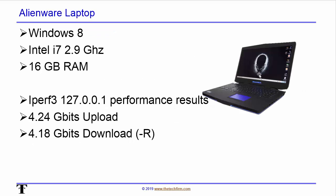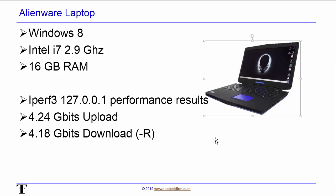I used my Alienware laptop running Windows 8, with an i7 processor at 2.9 GHz and 16 gigs of RAM — a fairly beefy computer. My iperf results were 4 gig up and 4 gig down. The reason I did that was because if I can't get at least 100 meg within my machine, there's no way I'm going to get 100 meg outside of it. You have to calibrate and test your equipment as well.